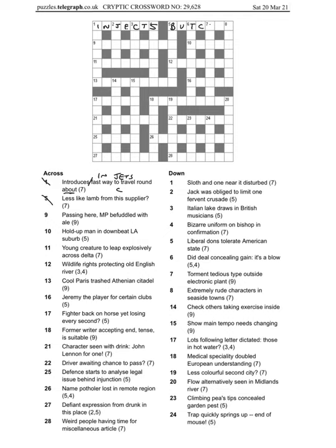5 across: less like a lamb from this supplier. Well, a lamb is a sort of timid thing, so if you're butcher, you'd be less like a lamb, and a butcher is a supplier of meat.